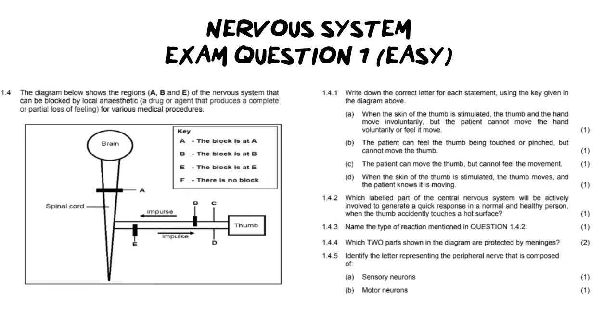So as I said, this is a pretty straightforward question. The question seems to be quite long and the reason for that is they are trying to overload you with information and see if you can filter through it to see what is worthwhile and what is not. So the diagram below shows the regions A, B and E of the nervous system that can be blocked by local anesthetic which is a drug that produces a complete or partial loss of feeling for various medical procedures and they've given you a schematic drawing.